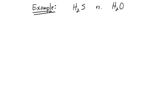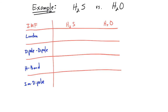Let's take a look at the intermolecular forces present in H2S versus H2O to see which molecule has the higher boiling point. We have to compare the intermolecular forces — the molecule with the strongest intermolecular forces will have the highest boiling point. Let's start by comparing the London forces for H2S and H2O. Because H2S is a bigger molecule, it will have a stronger London force.